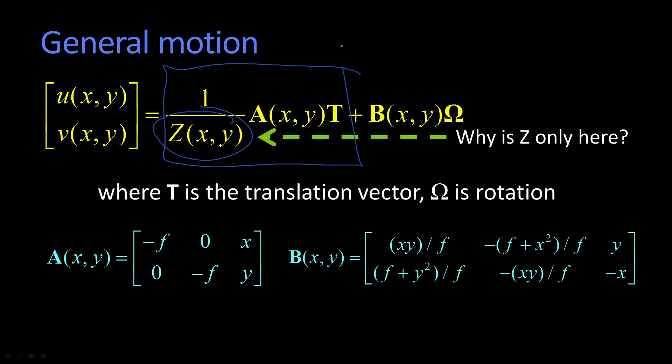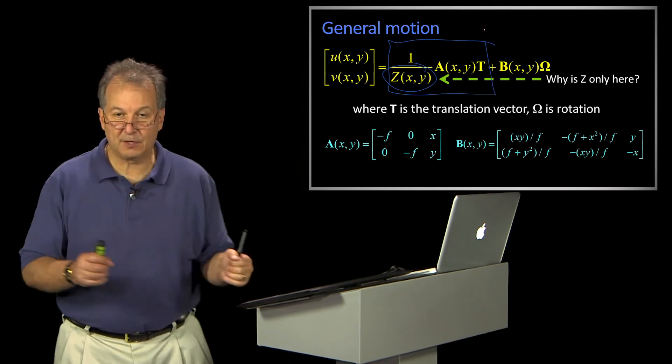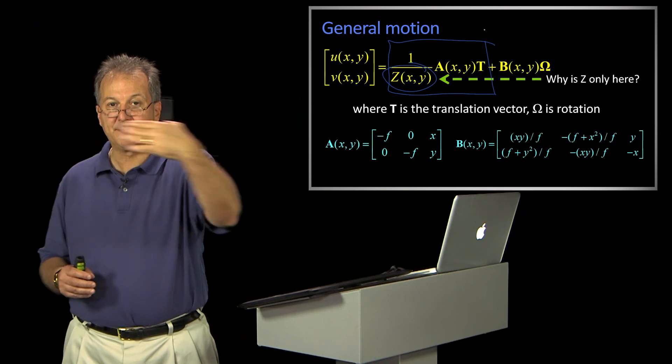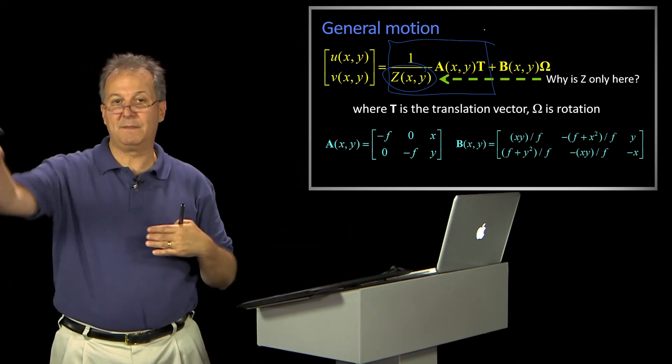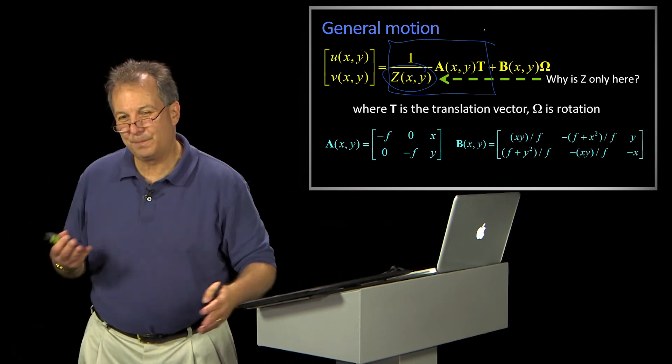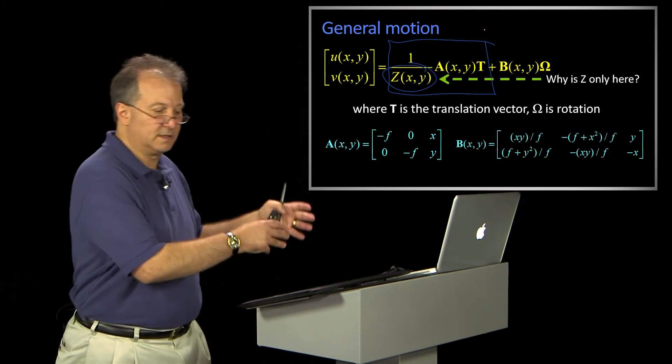If you don't translate, the depth doesn't matter in terms of how much things move. That's why we talked about when you build panoramas from rotation, I can just map the planes. I can map the rays because it didn't matter what the depth was. This is the general motion model. I hope this was not too pedantic. I like tying back the stuff we're doing now with the stuff we did before.